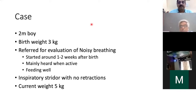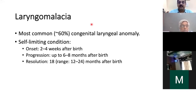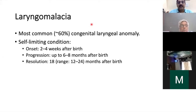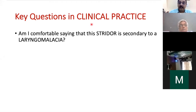Most people tend to believe this child has mild laryngomalacia and it will resolve with time. Laryngomalacia is the commonest laryngeal abnormality and is a self-limiting condition. Onset is usually around 2 to 4 weeks after birth, it can slightly progress up to 6 to 8 months, then gradually resolves, usually going away between 1 and 2 years of age. But the question is: are we absolutely comfortable saying this stridor is secondary to laryngomalacia? How are we certain? And if not, would you refer this child for a bronchoscopy?